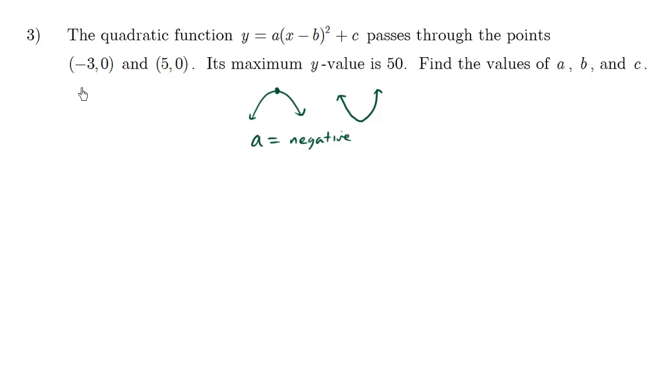When given points and an equation, it's good to plug them in. We have an x value, y value here. So let's plug in the (-3, 0) into here. So we have y equals a(x minus b) squared plus c. The y value here is 0. The x value here is negative 3, b squared plus c.